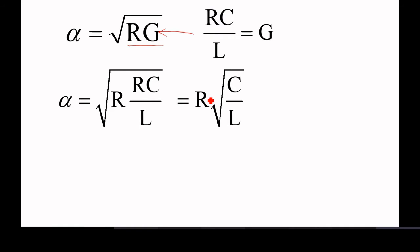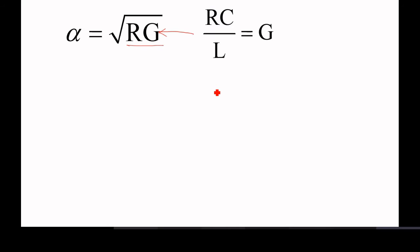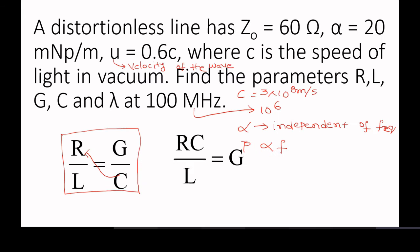In the problem statement, it is given characteristic impedance and alpha. Beta is not given in this problem. In the earlier problem, beta was given, so we solved in that way. But in this problem, beta is not given — only the velocity with which the wave is propagating, characteristic impedance, and alpha are given.